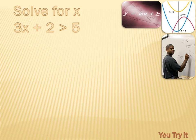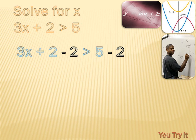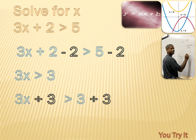Solving inequalities is pretty easy — you only have to remember one thing: if you multiply or divide both sides by a negative number, you must reverse the inequality sign. For 3x plus 2 is greater than 5, this is a two-step inequality. First, subtract 2 from both sides to get 3x is greater than 3. Then divide both sides by 3 — since it's positive, no reversal needed — and you get x is greater than 1.